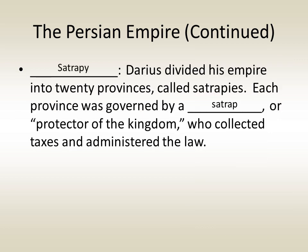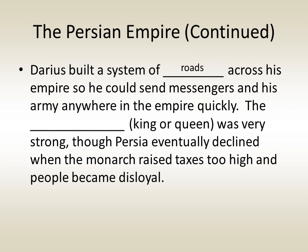Darius divided his empire into satrapies, or provinces. Each province was governed by an individual called a satrap — a protector of the kingdom — who collected taxes and administered the law. Darius also built a system of roads across his empire so he could send messages and his army anywhere quickly. The empire did eventually decline when the monarch raised taxes too high and people became disloyal.